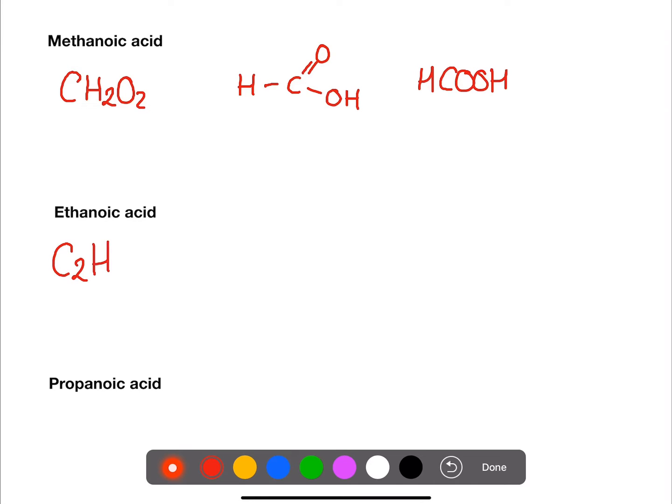Ethanoic acid, C2H4O2, has the following structure. So we have two carbons. On the end carbon we have the functional group and then we have the rest of the chain.